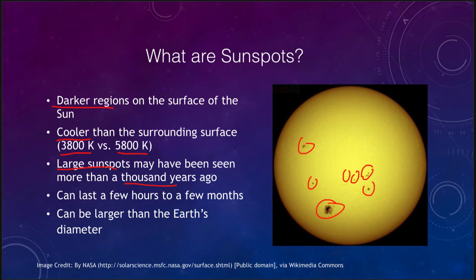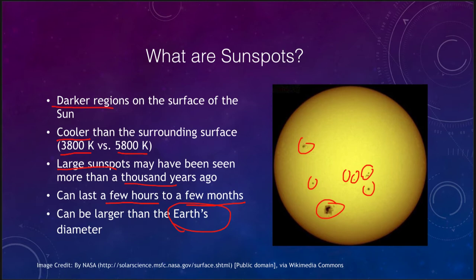However, it is possible that some very large sunspots or sunspot groupings may have been seen more than a thousand years ago. The most recent modern detection of sunspots was by Galileo with the telescope. These sunspots can last anywhere from a few hours to a few months, and they can be larger than the size of the Earth — so these can be very big objects, though others can be smaller.